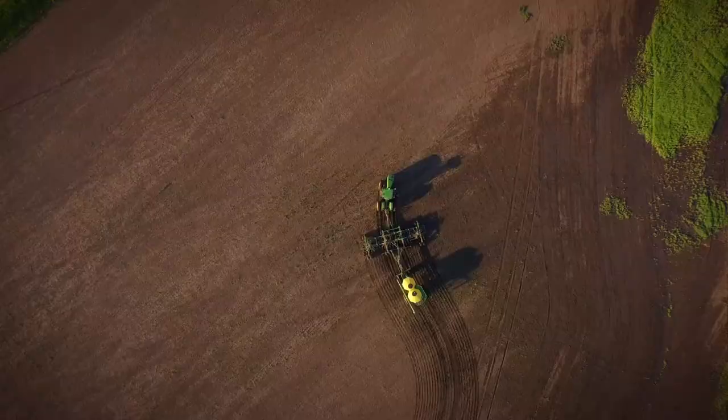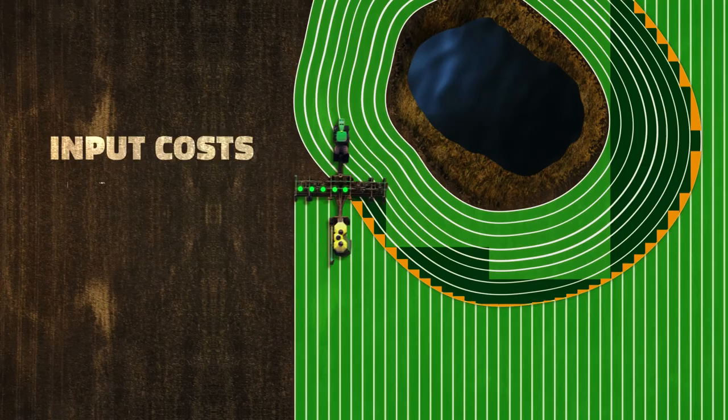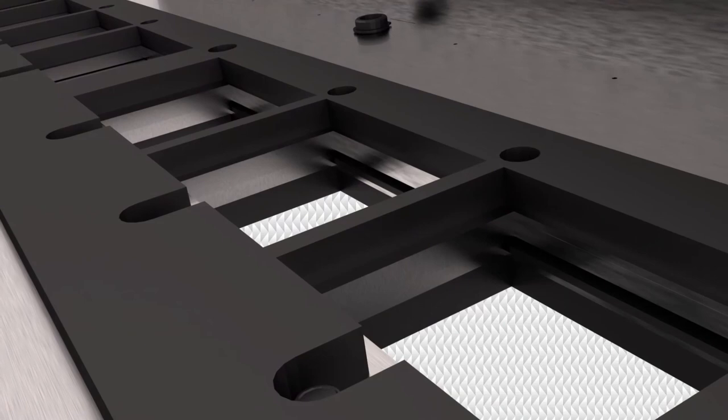Preventing overlap and overseeding is crucial to reducing input costs. With Engage Zone Control, you can rest easy knowing what you put into your field is going to deliver maximum return with minimal investment.